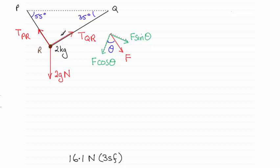This is a very special question because not all questions like this have a right angle. If you look carefully, we've got 55 degrees and 35 degrees, which total 90 degrees, meaning this angle has to be a right angle. Normally we would resolve vertically and horizontally, but because we've got a right angle, if we resolve along one string's direction, the other tension is perpendicular and doesn't enter the equation.